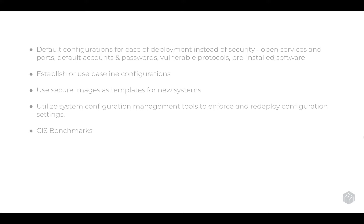Having a baseline configuration in place so that when a new device is purchased and introduced into the network, you know the steps to bring it into compliance with your baseline policies. You could use secure images as a template for building new systems, or utilize system configuration management tools that enforce and redeploy configuration settings when necessary. If you're looking for guidance on what configuration changes to make, I recommend starting with the CIS benchmarks — they go through each operating system and version and tell you exactly the configuration changes you should make to make systems more secure.